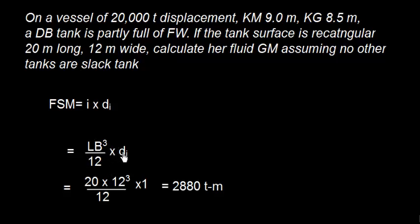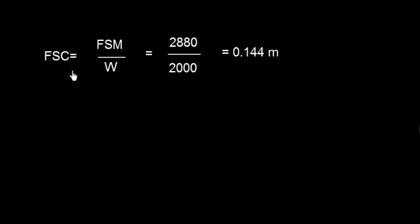This box-shaped vessel is 20 meters long, so I use this 20. B is 12 meters, so I use this 12 meters divided by 12, times d_i. The density of liquid inside the tank - this is full of fresh water - so I use 1. When I multiply this, I get the value 2880 ton-meters.